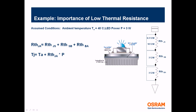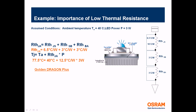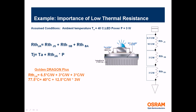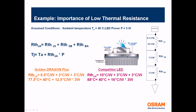Let's look at how we can utilize this concept by comparing two different LEDs with different thermal resistances. The Golden Dragon has a thermal resistance of 6.5 degrees C per watt, and another LED has 10 degrees C per watt. With the rest of the system being the same — substrate at 3 degrees C per watt and heat sink at 3 degrees C per watt — adding all three components gives a total thermal resistance of 12.5 degrees C per watt for the Golden Dragon system versus 16.5 degrees C per watt for the other LED.